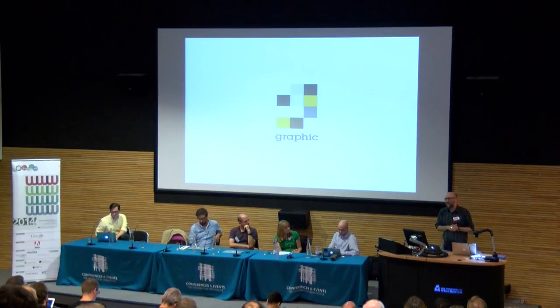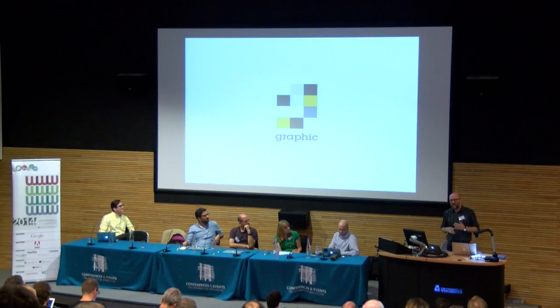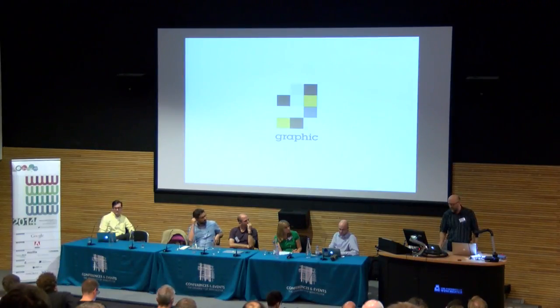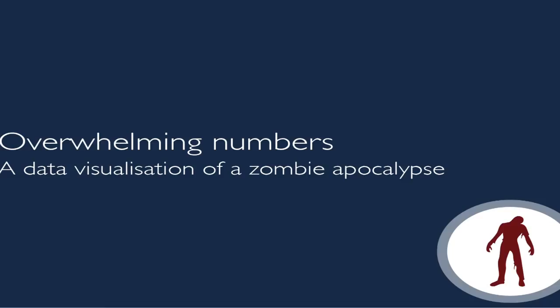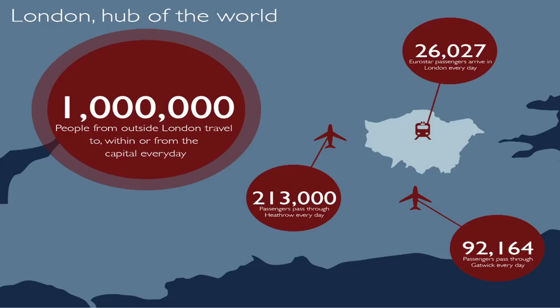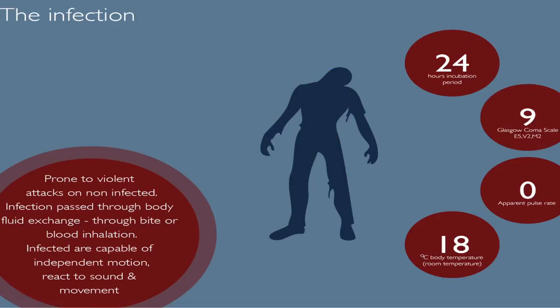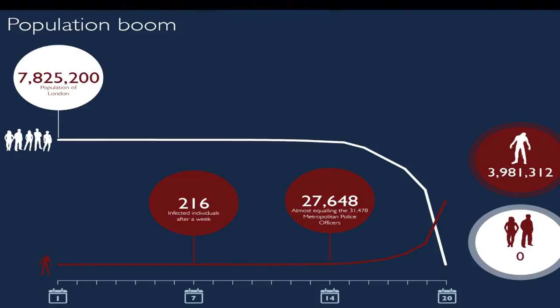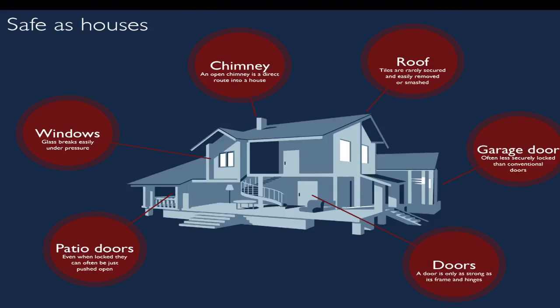I want to talk about something that I don't think has been covered in the conference, at least not in the sessions I've been in, and that's the coming zombie apocalypse. This is a serious matter. In the southeast of England, we live in an international travel hub. When zombification breaks out, it is going to spread fast. Models suggest that there will be an exponential growth. And we are doomed.